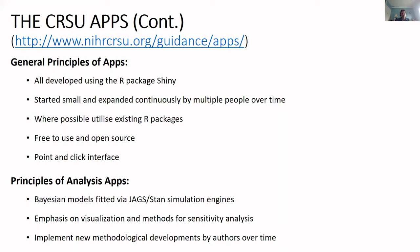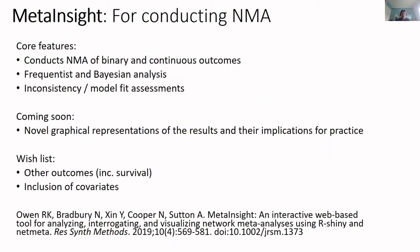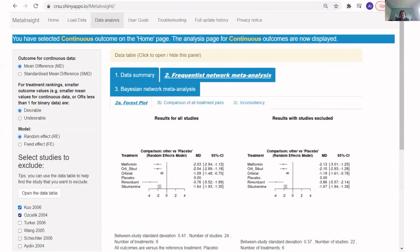MetaInsight basically conducts network meta-analysis for binary and continuous outcomes — both frequentist and Bayesian analysis are incorporated. You can do more sophisticated inconsistency and model fit assessments. We have more graphical representations coming soon, feeding from innovative methodological work being done in parallel. People want survival analysis and inclusion of covariates, and we hope to offer those very soon. The first paper on that app is cited at the bottom — but of course you can go and play with it if you're interested.